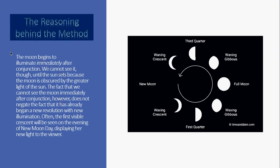The moon begins to illuminate immediately after conjunction. We cannot see it until the sun sets, because the moon is obscured by the greater light of the sun. The fact that we cannot see the moon immediately after conjunction does not negate the fact that it has already begun a new revolution with new illumination. Often the first visible crescent will be seen on the evening of the new moon displaying a new light to the viewer.